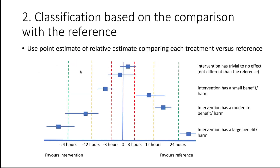The second step is the classification based on comparison with the reference, demonstrating the different thresholds identified. Less than three hours of decrease or increase was considered trivial or no effect, as represented by two estimates here, ignoring the confidence intervals — an important point for the partially contextualized rating. A small effect would be more than three hours based on the point estimate, either decrease or increase; then a moderate estimate; and a large estimate — always focusing on the point estimate.